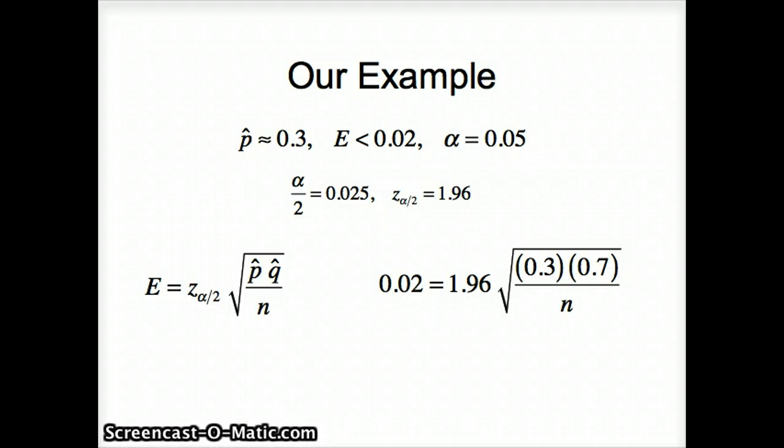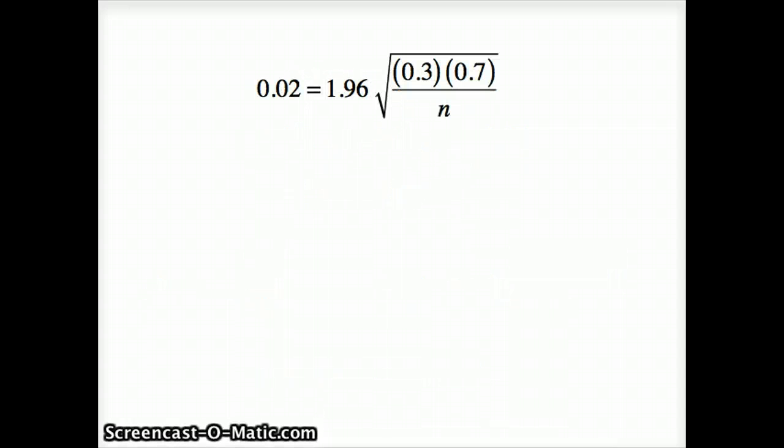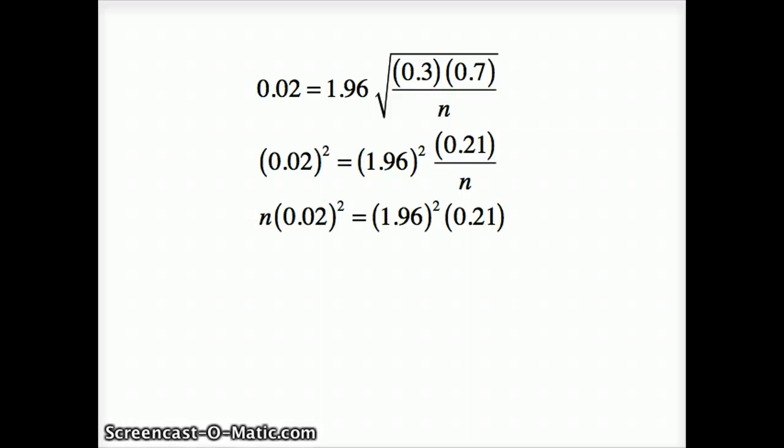So those are the numbers plugged in, and we recognize that our next step is to solve for n. In order to get rid of the square root, we're going to have to square both sides. Now to solve for n, the simplest thing to do would be to multiply n on both sides, which would then give us this. And to isolate n, we'll divide both sides by 0.02 squared.